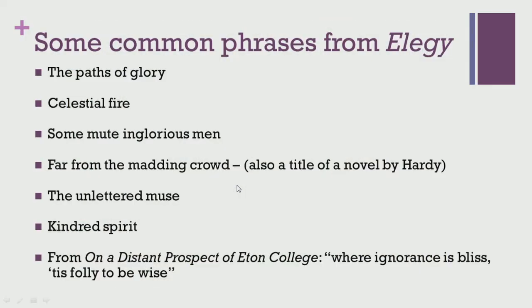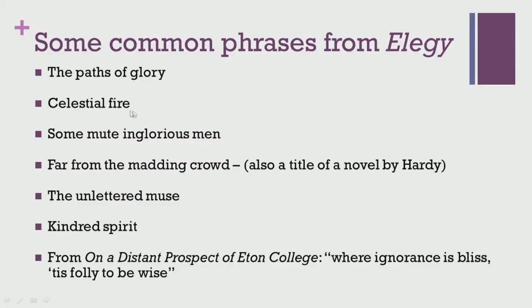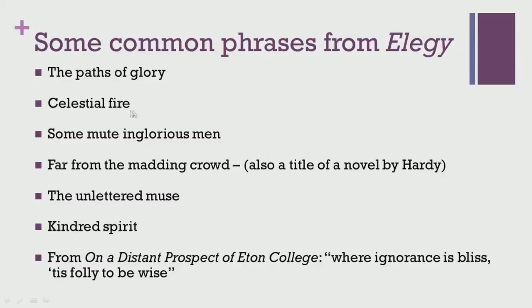A lot of phrases were borrowed into the English language from this elegy — phrases such as 'the paths of glory,' 'celestial fire,' 'some mute inglorious Milton,' 'Far from the madding crowd' — which incidentally was also borrowed by Thomas Hardy for the title of his novel at a later point — 'the unlettered Muse,' and 'kindred spirit.' All of these phrases used in Gray's elegy became part of various kinds of expressions in the English language.